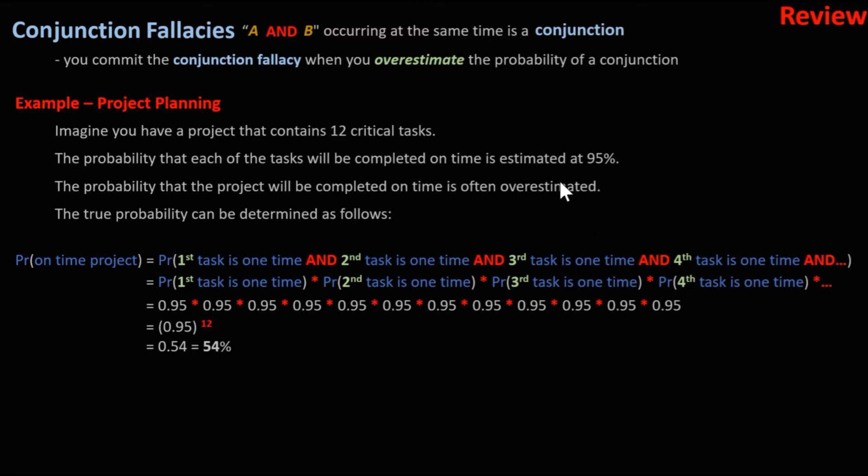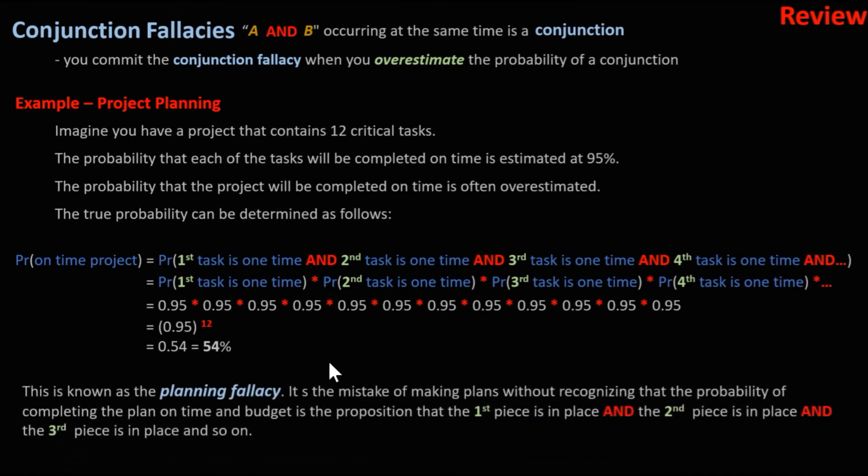Lots of people will look at the probability of any one coming in on time is 95%, so they assume that the project will be on time 95%. That's the conjunction fallacy. In fact, this happens so often in planning they call it the planning fallacy. It's the mistake of overestimating the probability the plan will come in on time.